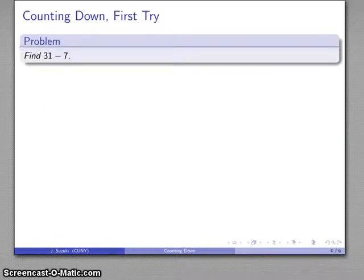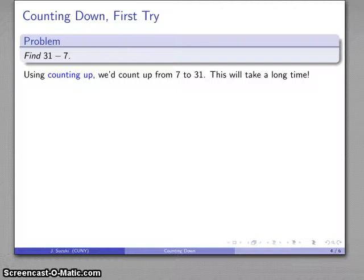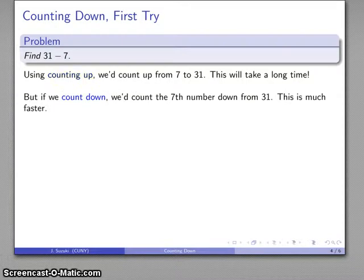So, let's consider the problem 31 minus 7. Now, if I only knew how to count up, I'd have to count up from 7 to 31, and this could take a while. On the other hand, if I try counting down, then what I want to do is find the 7th number before 31, and that's going to be much faster.